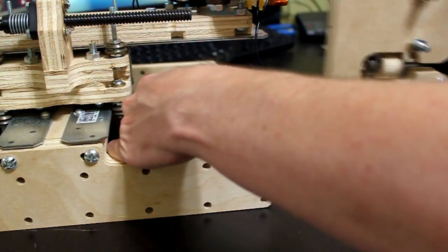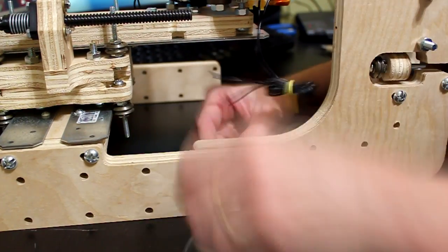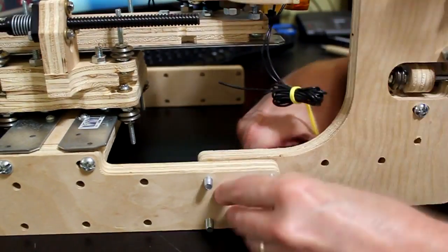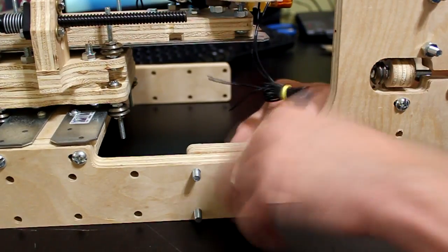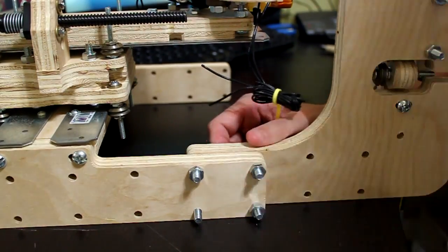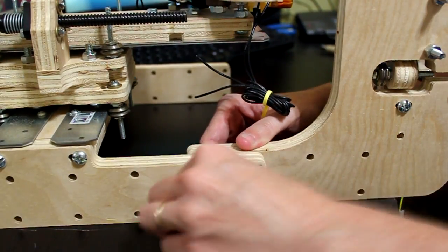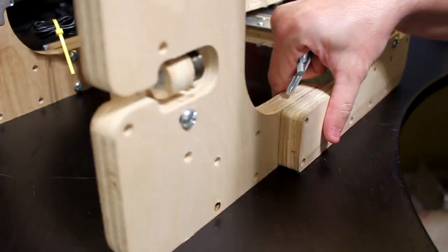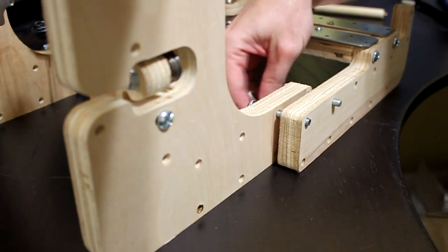In the next steps we will fasten the lower structural side to the upper structural side. In this particular configuration as you can see there are many holes. This is the set of holes that will allow for the greatest z-axis movement for doing plastic printing, 3D printing.